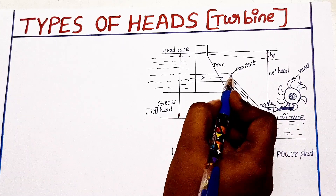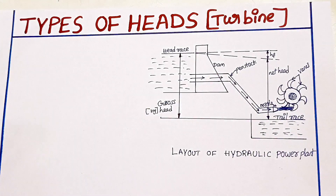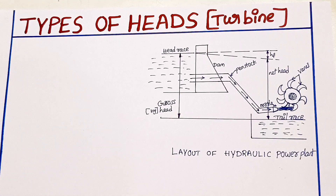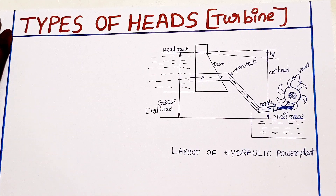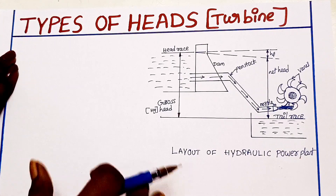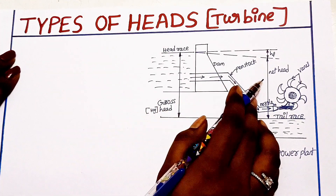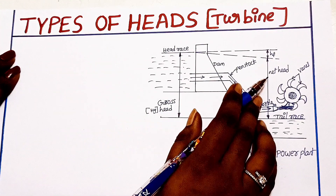The penstock consists of large pipes that carry water to the turbine. There are two types of heads: the first is gross head, and the second is net head.